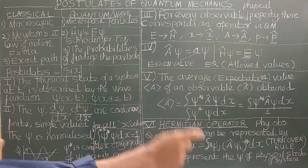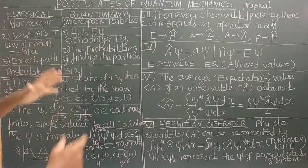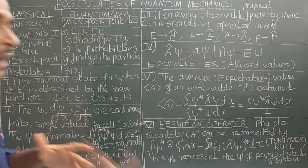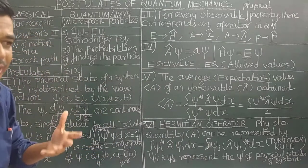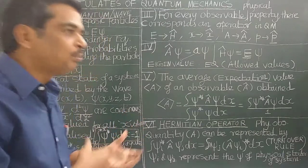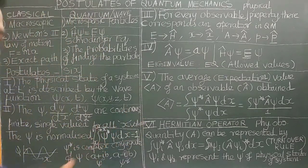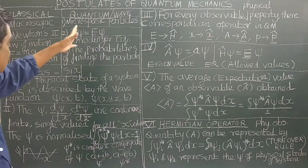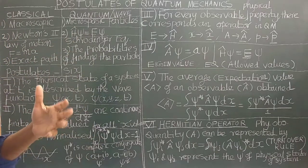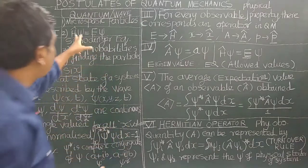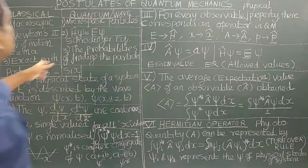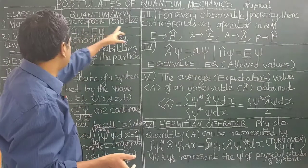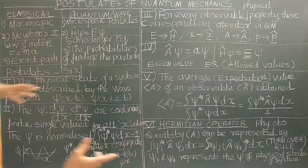We will just see what are macroscopic particles and what are microscopic particles. Macroscopic particles, for example, earth, planet, ball, etc. What are microscopic particles? Subatomic particles like the electron, proton, neutron — they are called subatomic particles or microscopic particles.